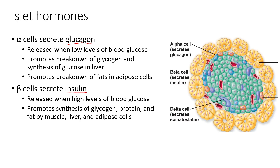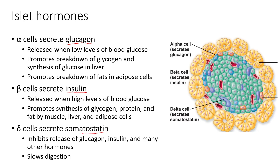Glucagon and insulin essentially oppose each other. Glucagon is released when energy levels are low and we need to use stored energy. Insulin is secreted when nutrient levels are high and we have the opportunity to store excess nutrients in different energy storage forms. Finally, somatostatin is a hormone secreted by delta cells. It's more of a regulatory hormone involved in the inhibition of releasing glucagon, insulin, and other hormones, and it also plays a role in slowing digestion.